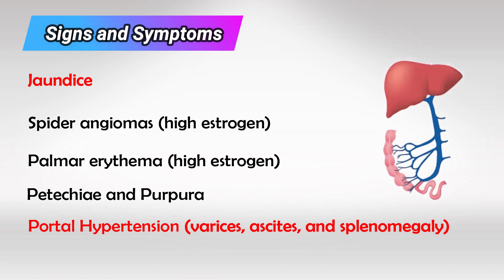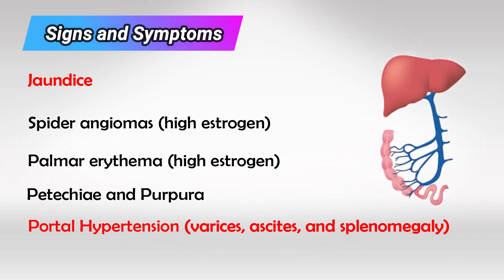Portal hypertension results in esophageal varices, gastric varices, ascites, splenomegaly, and anorectal varices.